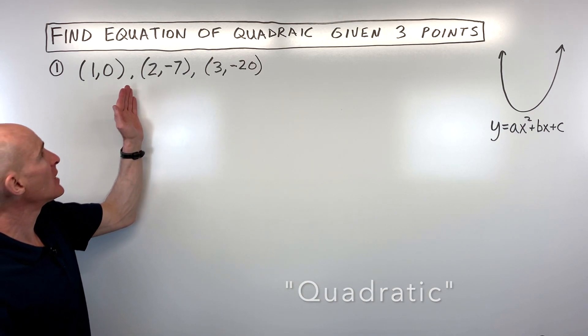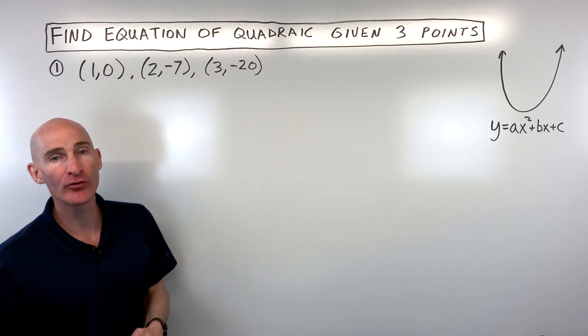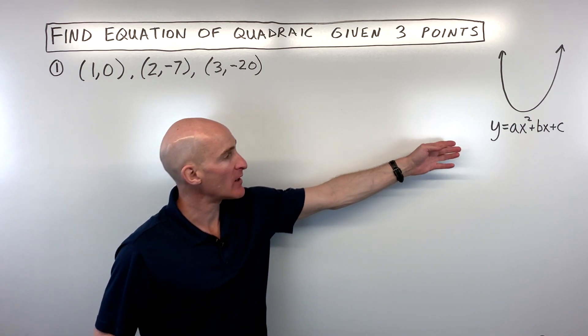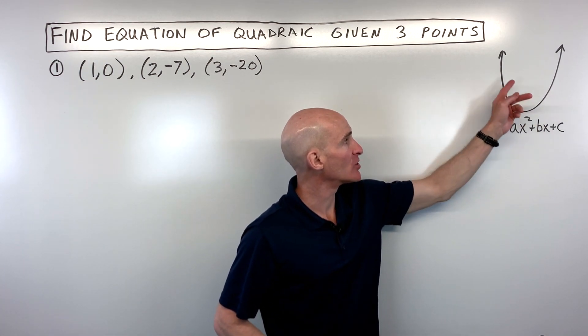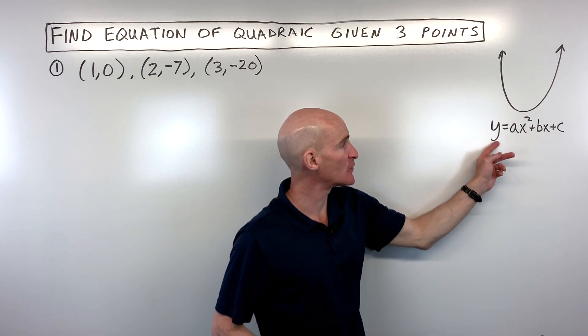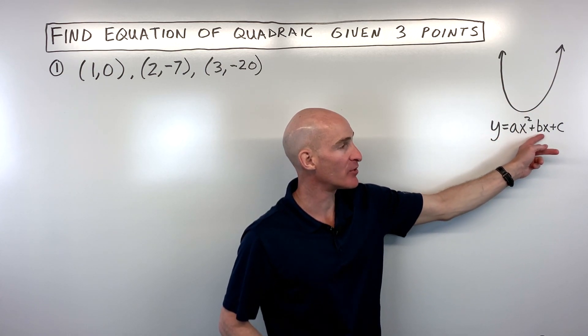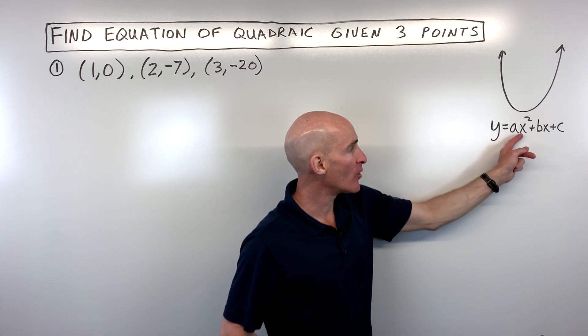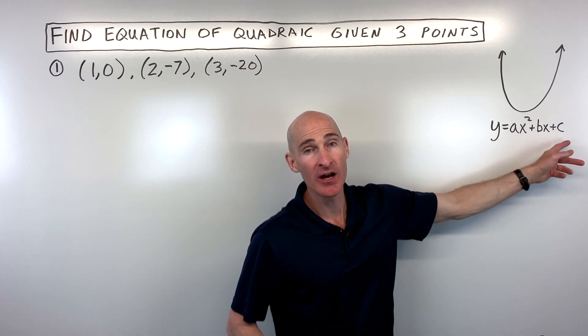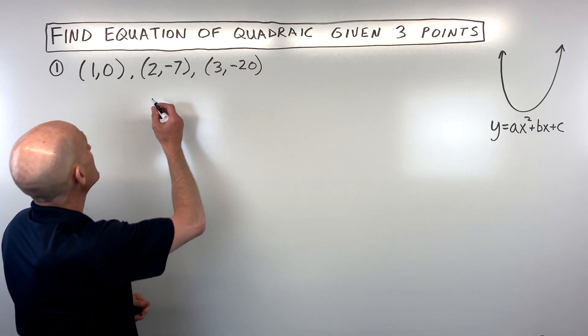Now if you want to test yourself, go ahead and try it and then we'll go through it together. But remember when you're writing the equation of a quadratic, which the graph is a parabola, it's in this form y equals ax squared plus bx plus c. Our goal is to figure out what a, b, and c are. So let's go ahead and dive right in.